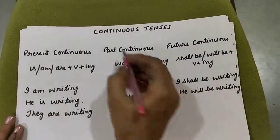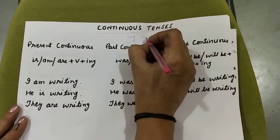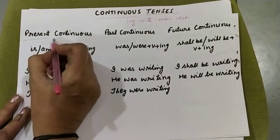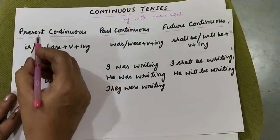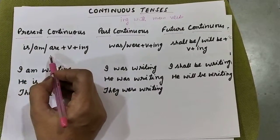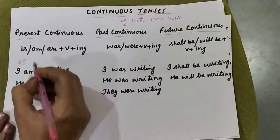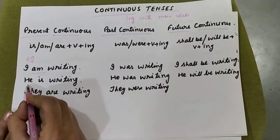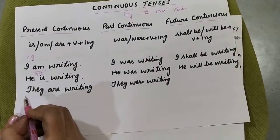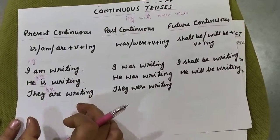Now we will move on to continuous tenses. Continuous tenses are those where we add '-ing' with the main verb. So here we have present continuous, past continuous, and future continuous. In present continuous, we use 'is', 'am', or 'are' — that depends upon the subject — plus the verb with '-ing' added. For example, 'I am writing' — with 'I' we use 'am'. Or 'he is writing' — with he, she, it, we use 'is'. And if the subject is plural, we use 'are'. So 'they are writing' or 'we are writing'.